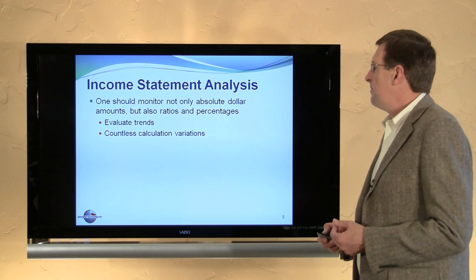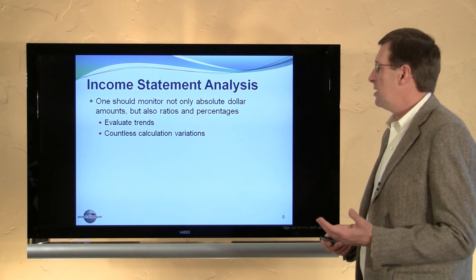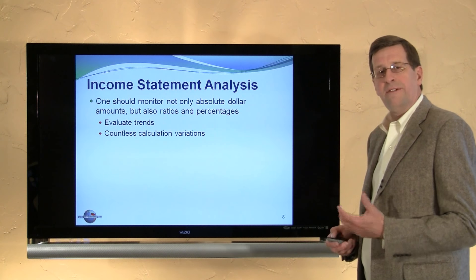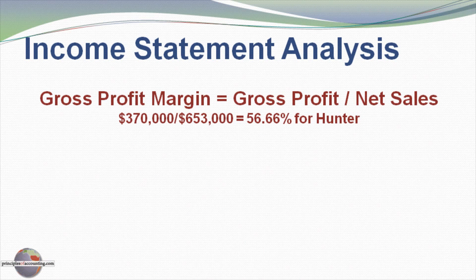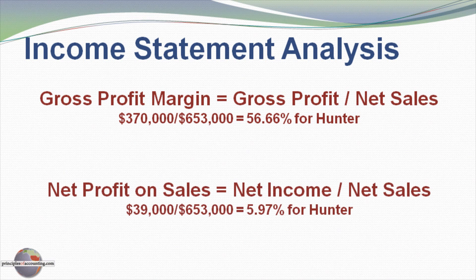Now, a detailed income statement does provide the opportunity to produce some analysis, evaluate trends, and provide various sub-calculations and ratios. I'm showing here a calculation of what we call a gross profit margin — it's simply the gross profit divided by the net sales. Hunter Company's gross profit was $370,000 and their net sales was $653,000, giving them a 56.66% gross profit margin. The net profit margin looks at the net income of $39,000 divided by the net sales, giving them almost a 6% net profit on sales ratio.